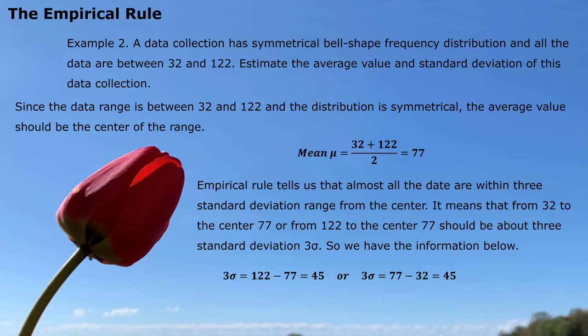Based on the Empirical Rule, this distance of 45 should be about 3 sigma. We can therefore solve: 45 divided by 3 gives a standard deviation of about 15.